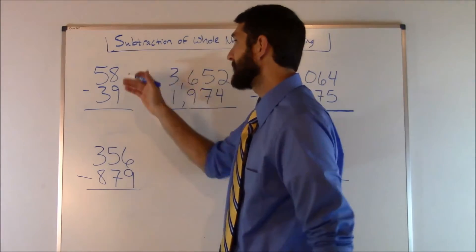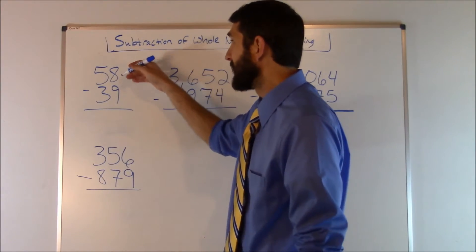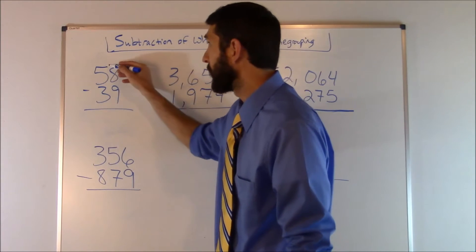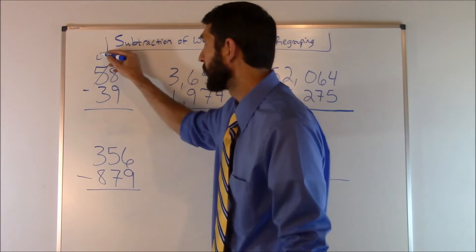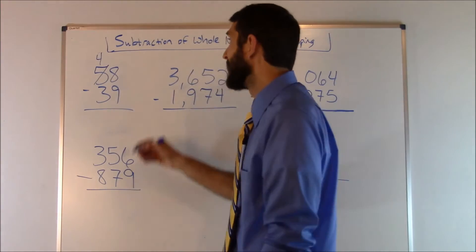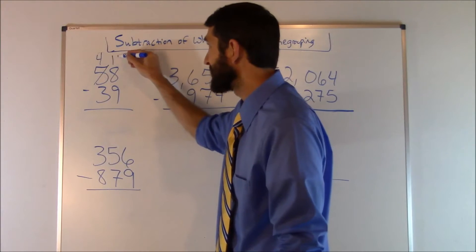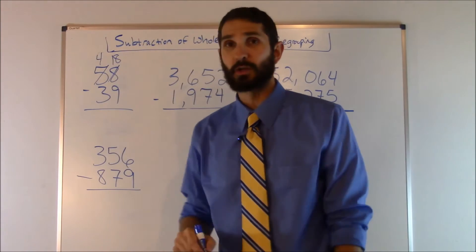So let's work this out: 58 minus 39. Again, we can't do nine from eight because that would give us a negative number, so we go to the neighbor and we borrow one. That's going to give us a four. We mark it out and put it up there, and then we add ten back. So ten plus eight, that's going to give us 18. So we write it up there and cross that out so we don't get confused.